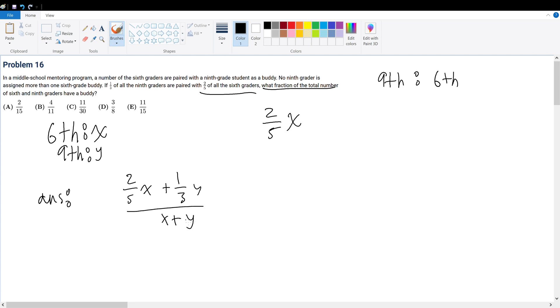But we know we have to isolate one variable in terms of the other to simplify this fraction. So what do we do? Well, this is a 1-to-1 pairing. So that means the fraction of 6th graders that have a buddy must be equal to the fraction of 9th graders that have a buddy. Otherwise, it won't be a 1-to-1 pairing, which is the given problem statement.